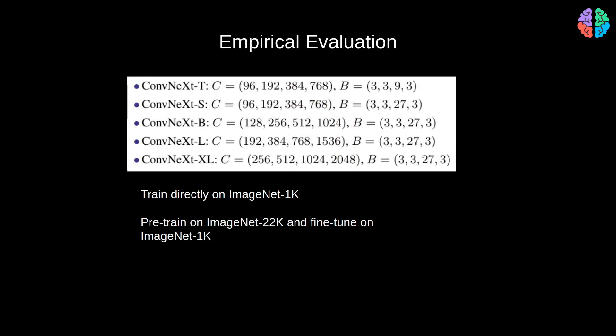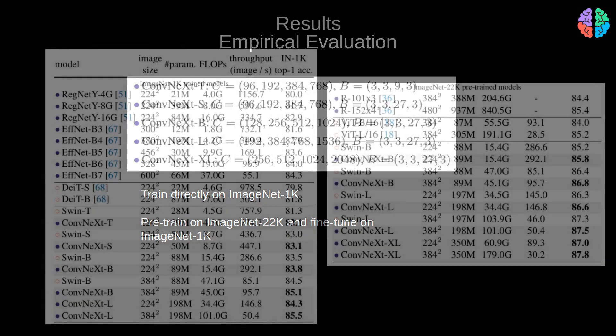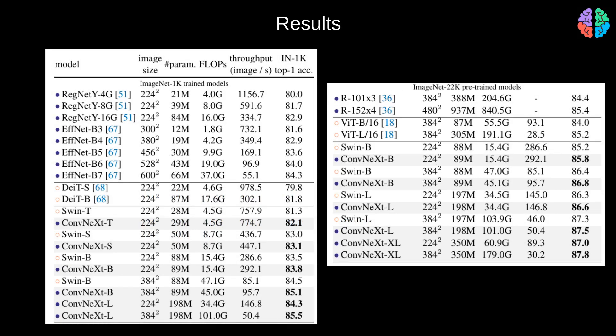For evaluation, the ConvNeXt architecture is proposed in different sizes from tiny to extra-large, all by increasing the number of channels and blocks per stage. Results on ImageNet-1K show that both with and without ImageNet-22K pre-training, ConvNeXt surpasses Swin Transformer in each case.